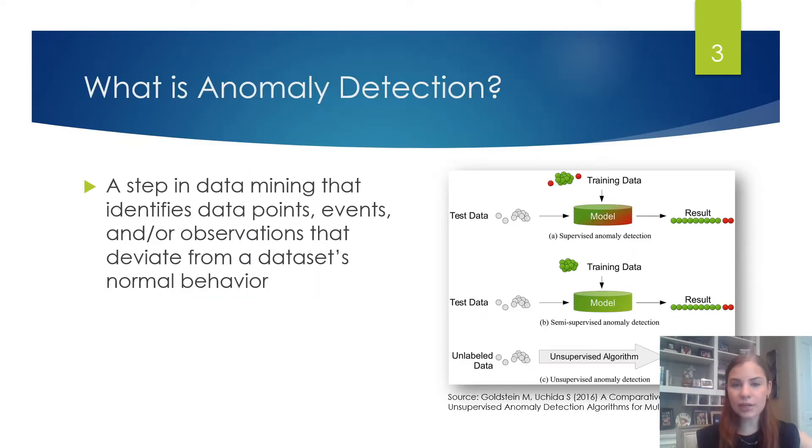So what is anomaly detection? Anomaly detection is a step in data mining that identifies data points, events, and observations that deviate from a dataset's normal behavior. Anomalous data can indicate critical incidents such as a technical glitch or machine going down. Machine learning is progressively being used to automate anomaly detection.